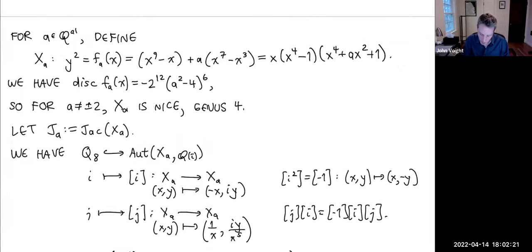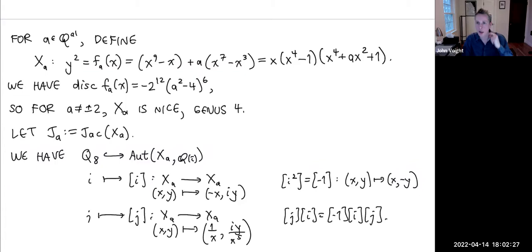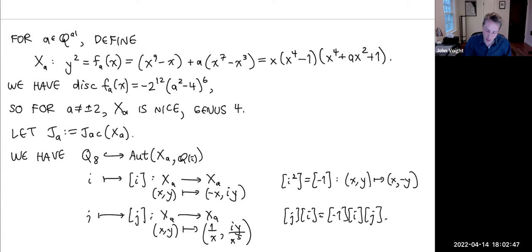About half an hour in and I've mentioned quaternions — you can see why I was brought on as quaternionic muscle in this project. These are basically the universal family of genus-4 curves equipped with an action by Q_8, the quaternion group of order 8, generated by i and j where they square to −1. The automorphisms are only defined over Q(i), not over Q itself.